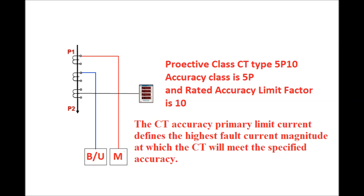The rated burden of the secondary side is defined on the nameplate of the CT. For example, if the rated burden is 20 VA and 20 VA is connected in the secondary side of the CT, then under rated current the burden will be 20 VA. Under this condition, the accuracy limit factor is 10 and the error is limited to 5%. So the accuracy limit factor also depends on the burden connected in the CT's secondary side.